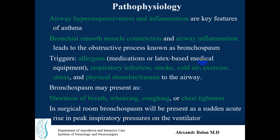Regarding pathophysiology, airway hyper-responsiveness and inflammation are key features of asthma. Bronchial smooth muscle constriction and airway inflammation lead to an obstructive process known as bronchospasm. This occurs at the level of the bronchi, where the wall becomes inflamed or edematous, smooth muscle constricts, and becomes hypertrophic over long periods of time.